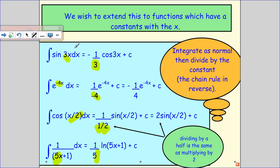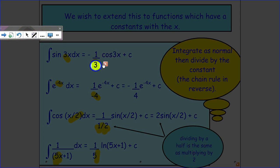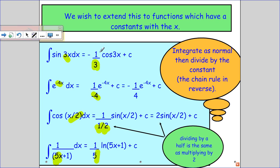So if I've got sine 3x, that would have come from minus cos 3x divided by the 3 because that extra 3 would have generated a 3 when we differentiated. And because it's not there,